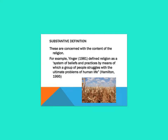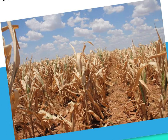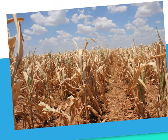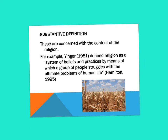Sociologists tend to adopt either a functional or substantive approach to defining religion. The substantive definition is concerned with the content of religion. Yinger in 1981 defined religion as a system of beliefs and practices by means of which a group of people struggles with the ultimate problems of life, helping individuals gain understanding of what is going on in their life. For example, when there is a drought or famine, the substantive definition gives individuals a reason and an explanation as to why that is happening to them.